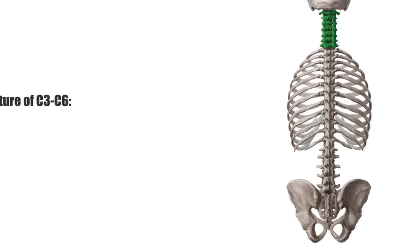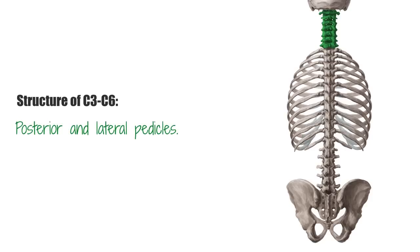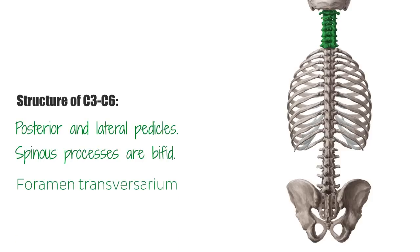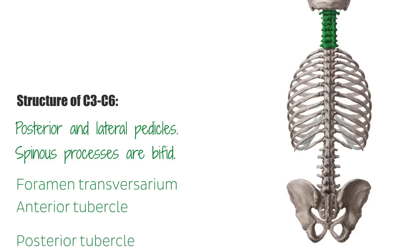The cervical vertebrae C3 to C6 have small bodies with posterior and lateral pedicles. The short spinous processes are bifid in shape, whereas the vertebral foramina are shaped like large triangles. Within each transverse process, there is a foramen transversarium, and at the level of C6, the vertebral artery enters the corresponding foramen. The anterior tubercle and the posterior tubercle are the anterior and posterior portions of the transverse processes.